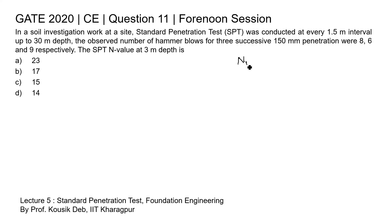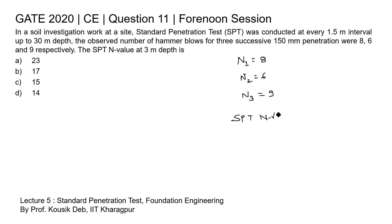In this question, n1 is given as 8, n2 as 6, and n3 as 9. So the SPT N value will be n2 plus n3, that is 6 plus 9, which equals 15. So the correct option is C: 15.